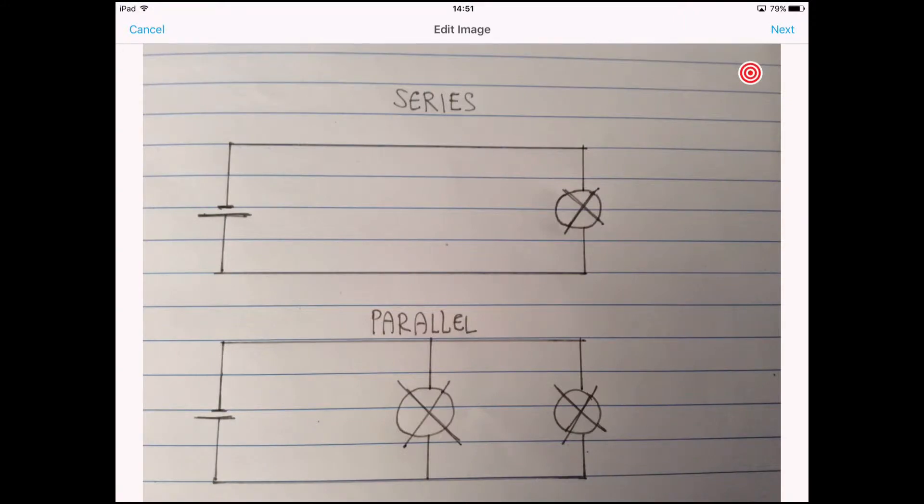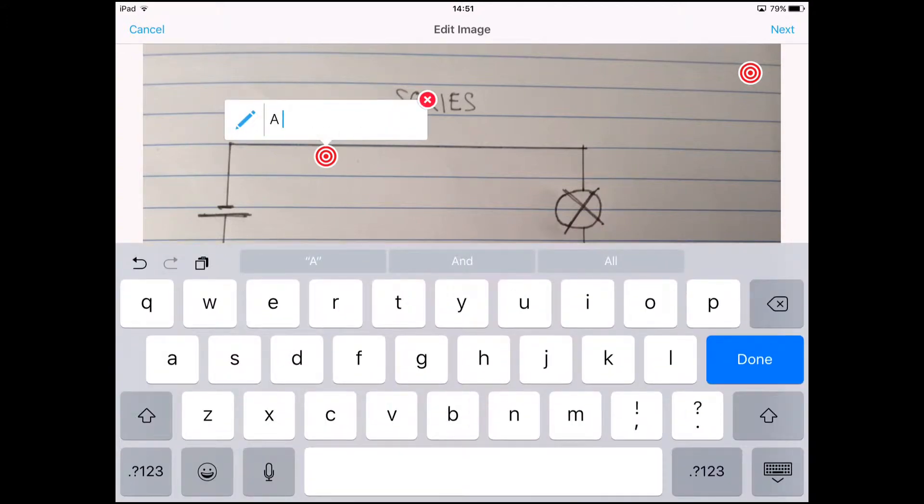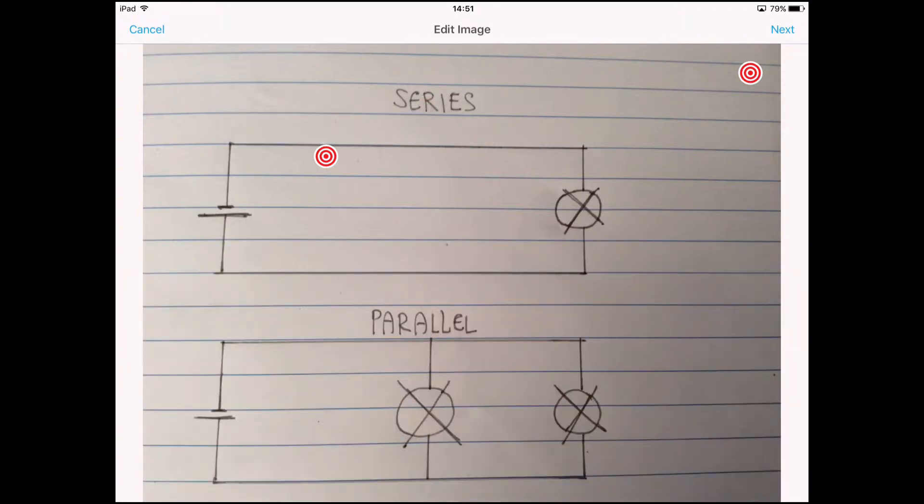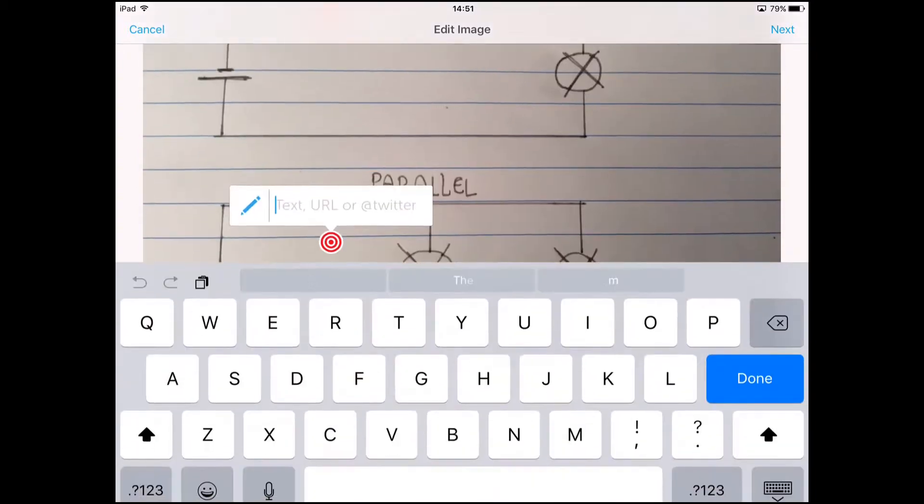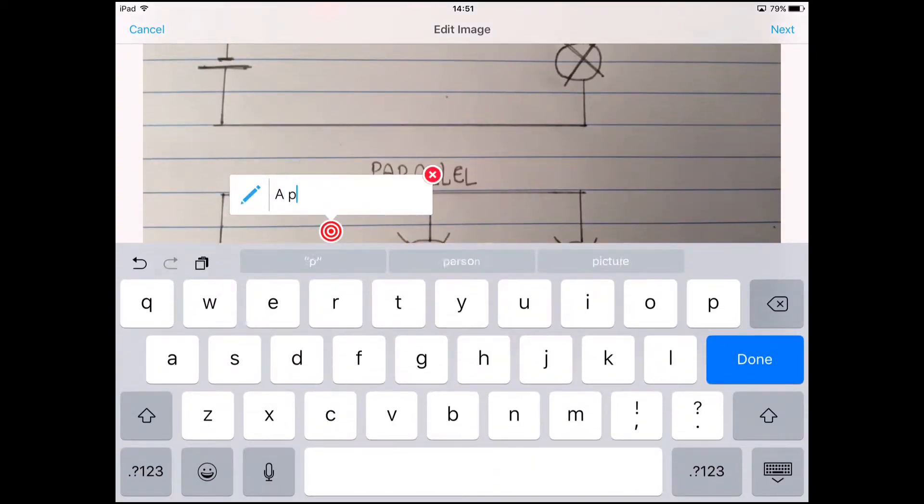All you need to do once you've done this is just tap where you want and you can choose whether to add text or media. Here I've added some text. Let's choose somewhere else now and add some more text. I asked the students to define what a parallel circuit was and what a series circuit was.